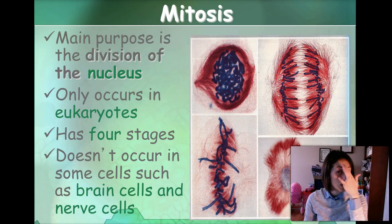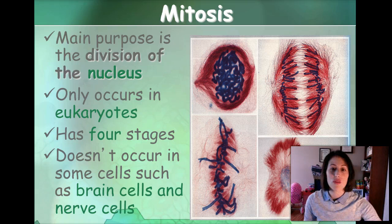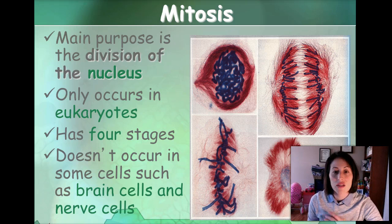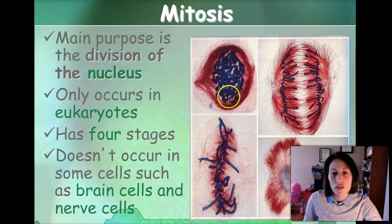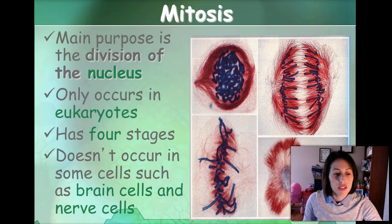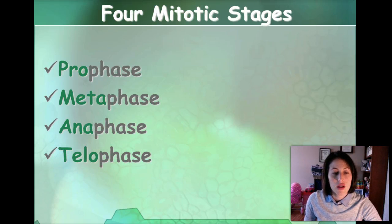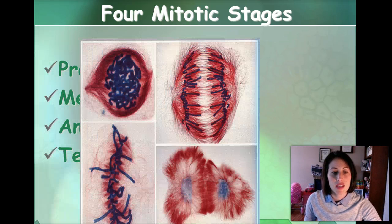Here are some pictures of a cell actually going through mitosis. These cells were stained so we can see proteins, which are the red fibers. The bluish coils are actually the chromosomes — those are the DNA. Of the four mitotic phases, there's prophase, metaphase, anaphase, and telophase.